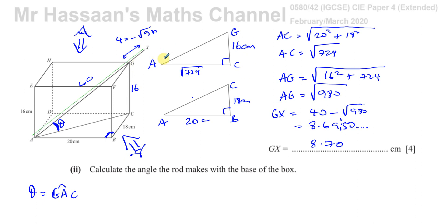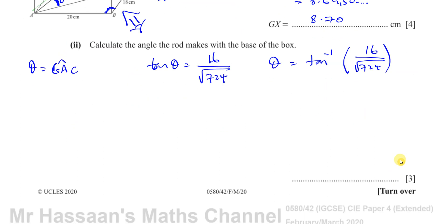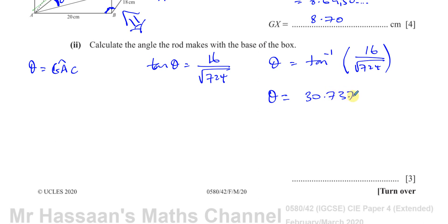Using triangle ACG again, we have a right angle triangle. The angle theta is GAC. We have the opposite side — which is CG = 16 — and the adjacent side — which is AC = the square root of 724. So tangent of theta equals 16 over the square root of 724. Therefore theta equals inverse tan of 16 over the square root of 724, which equals 30.737 degrees.